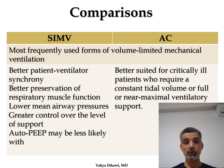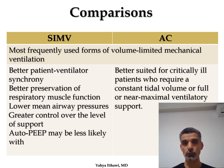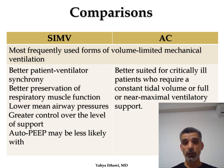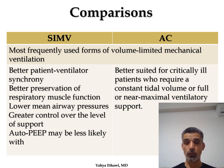Assisted control provides better patient-ventilator synchrony and is better for the more critically ill patient. If the patient is critically ill, use assisted control. If you want to wean the patient or the patient is awake and you do not want heavy sedation, use SIMV. With SIMV you can train the patient because you are not helping with the spontaneous breaths — only the backup rate is provided. The lower the backup rate, the more the patient depends on themselves. You can also train the diaphragm and chest wall by increasing the trigger.